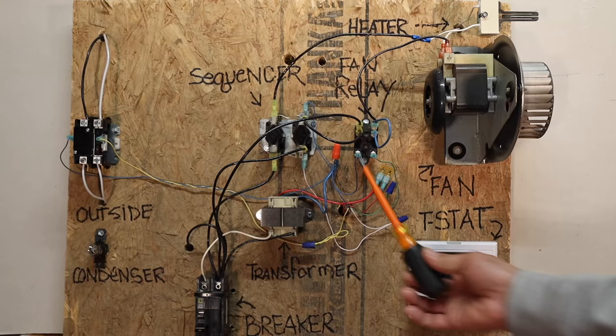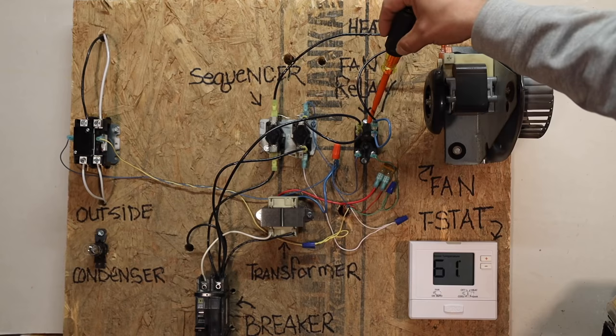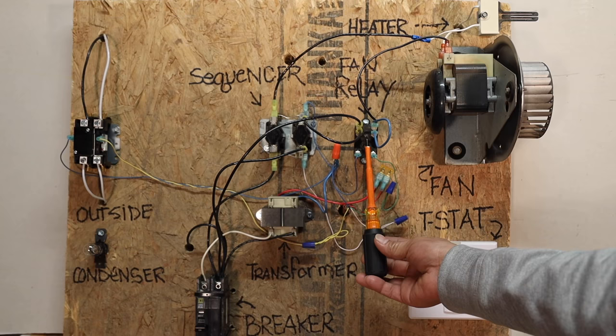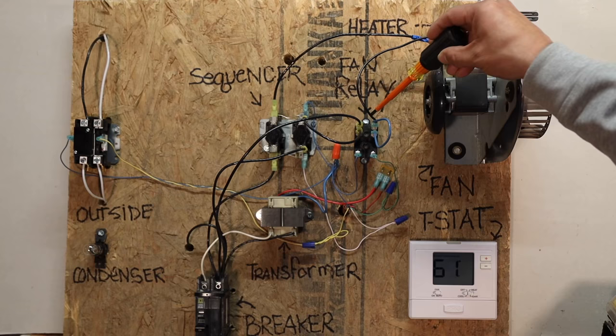These two top spade clips are what they call normally open, so they're broken right here. But when this has 24 volts applied to it, this piece of bimetal then pushes up and passes power from this side to this side, which then will energize your blower motor.